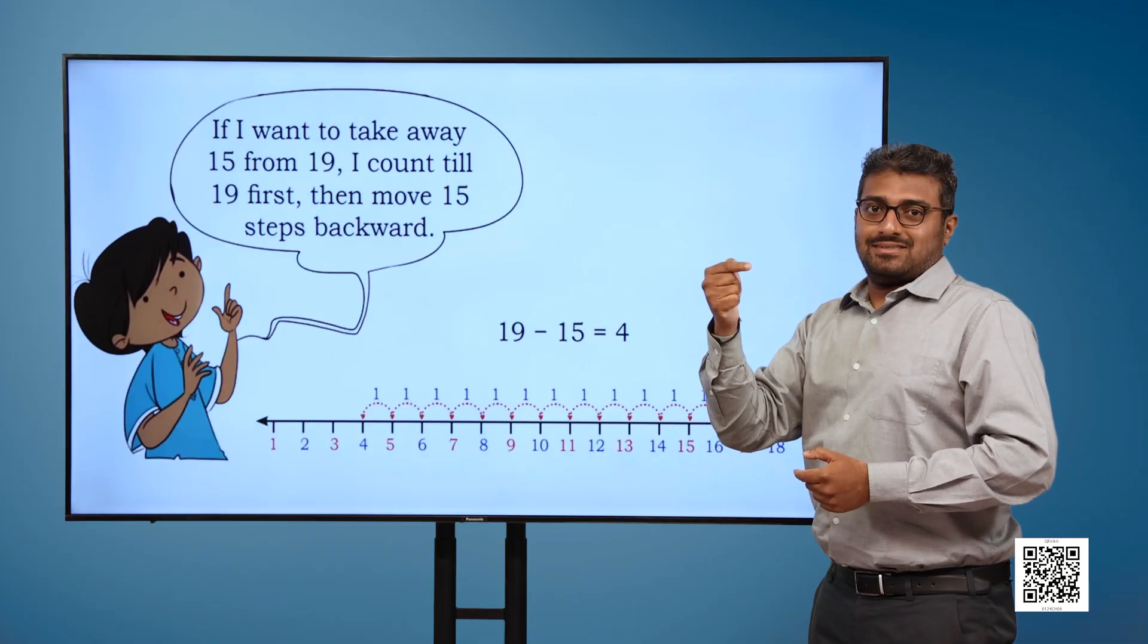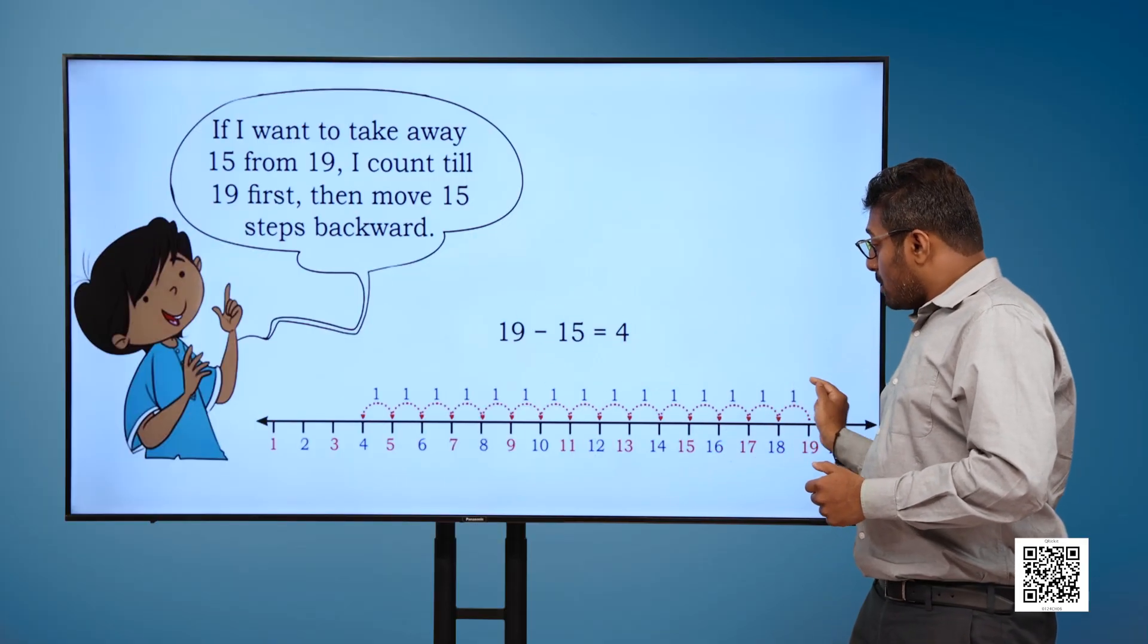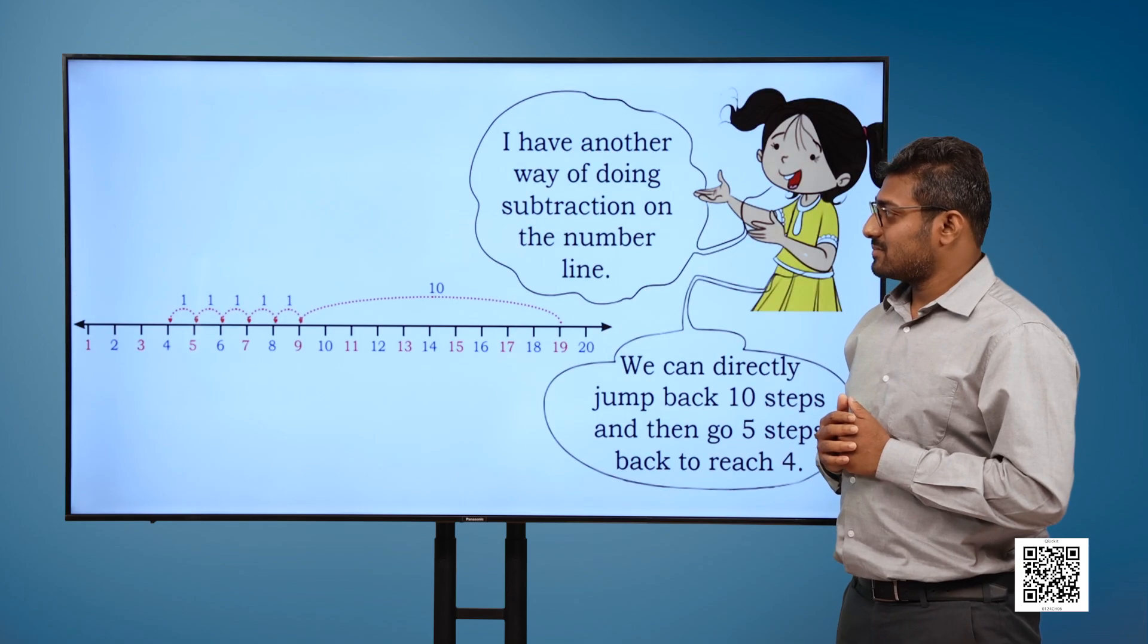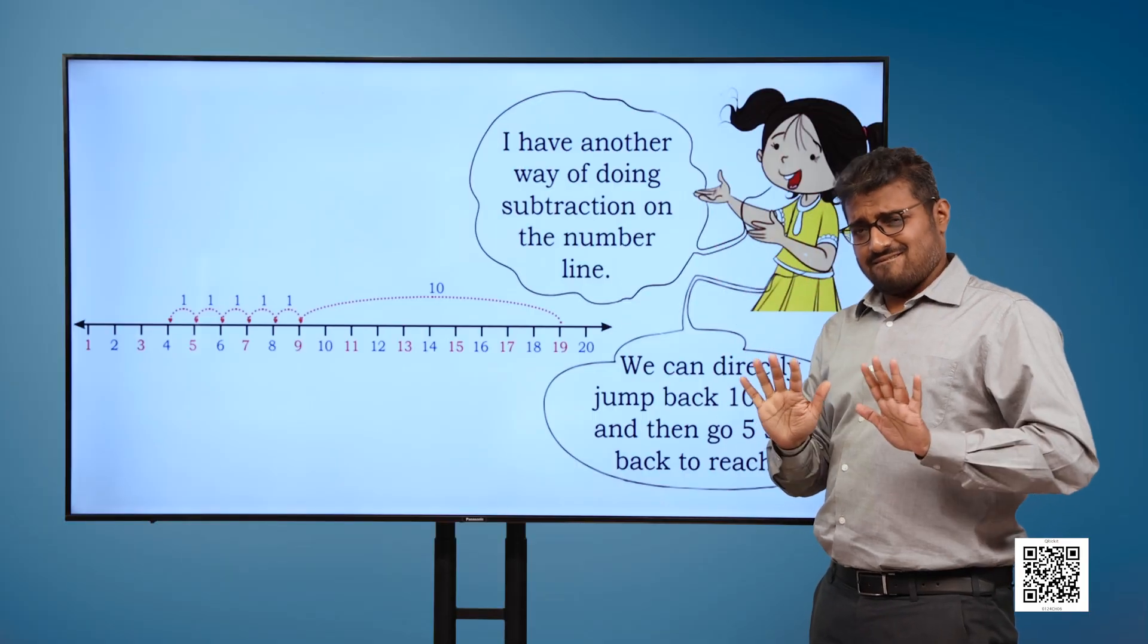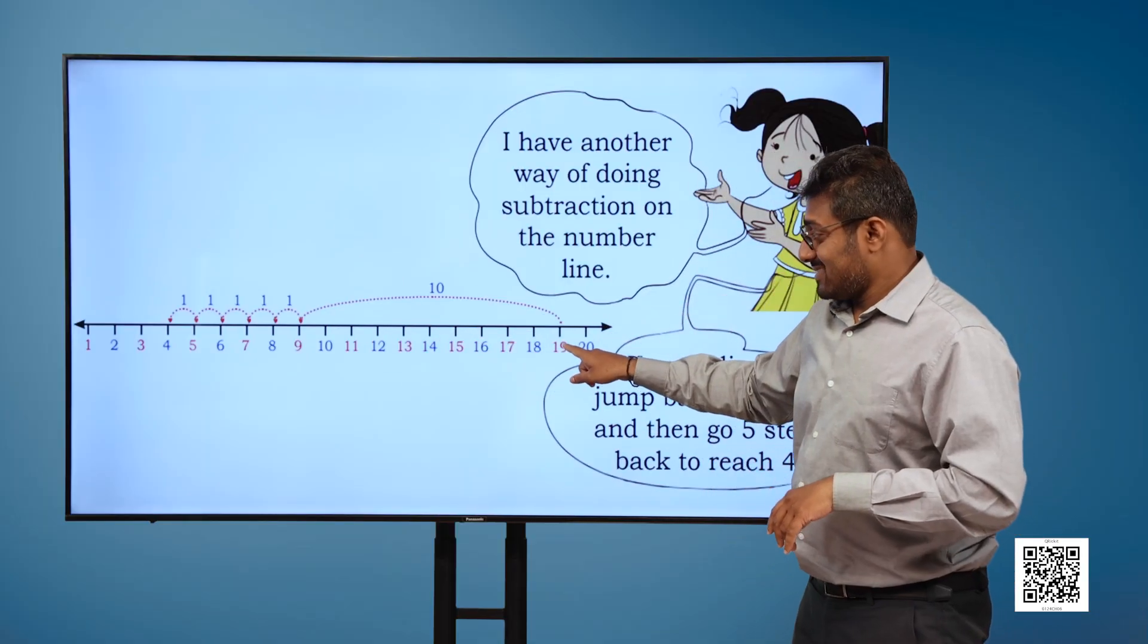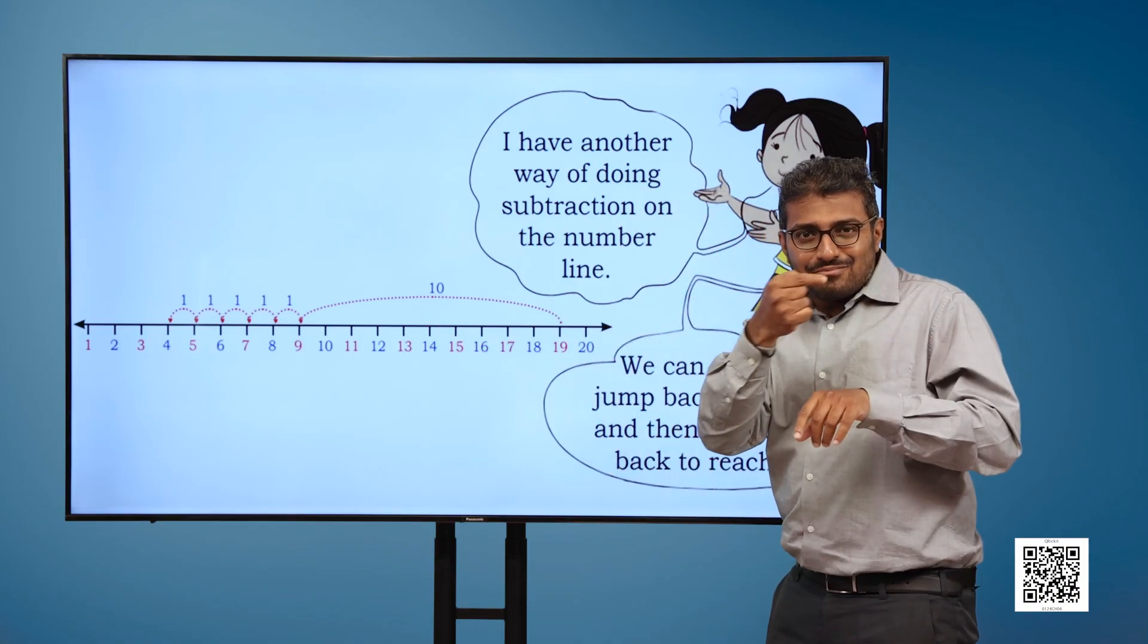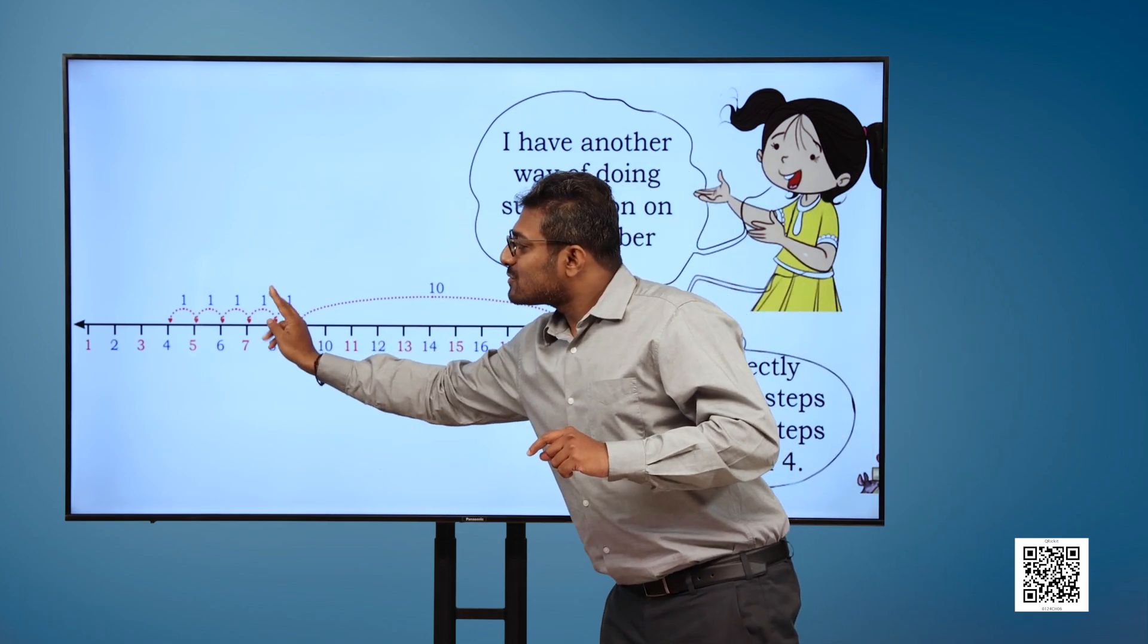Now, we have a number line once again. If we go 15 steps backward from 19, we will arrive at 4. Now the girl says, I have another way of doing subtraction on the number line.